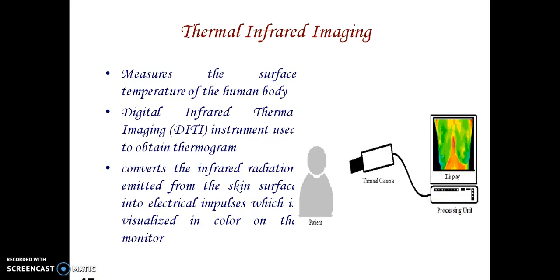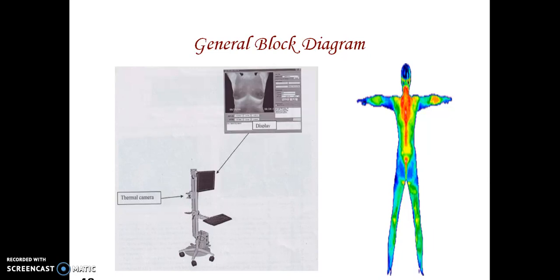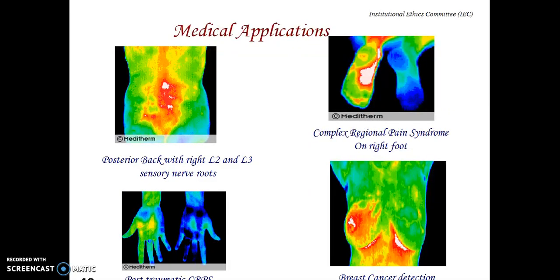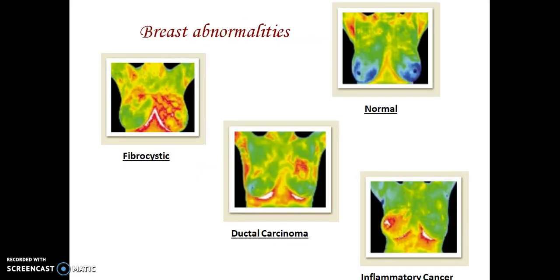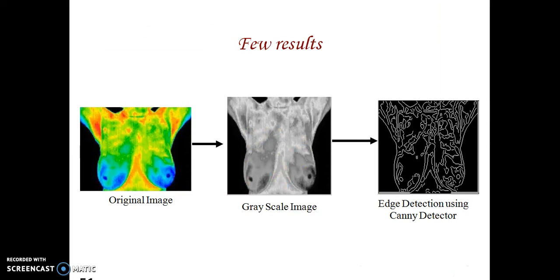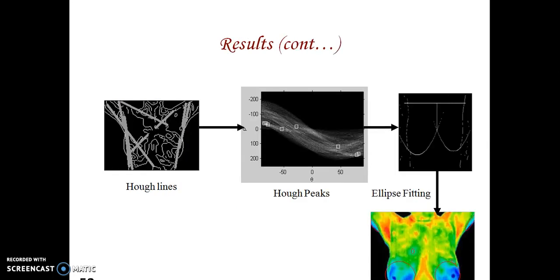Thermal imaging is a new area where we measure the surface temperature of the human body by converting infrared radiation emitted from the skin surface into electrical impulses, visualized as colors on a monitor. Blue indicates cold areas and orange indicates the most highly heated or affected areas. This shows posterior back with right sensory nerve nodes, pain syndrome in the right foot and left wrist. Thermal imaging also helps identify breast abnormalities and different kinds of cancer, and can segregate cancers. Using grayscale image processing and Hough transform, we can identify ellipses in a normal image.